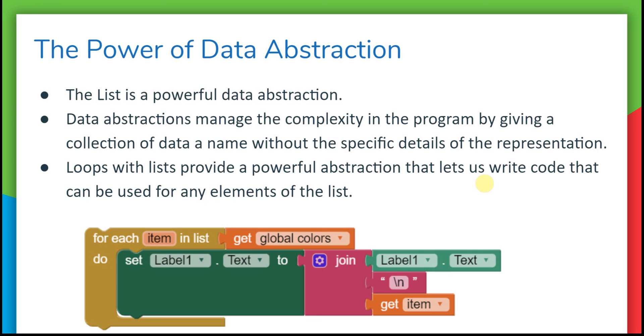The list is a very powerful data abstraction, and when we pair it with the algorithm of a loop, we get an even more powerful abstraction. Now we can write shorter code that visits every single item in the list. If we change this list so it has hundreds of items, we don't have to change our code at all - it will still work. Have fun with lists and loops this week!